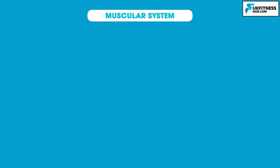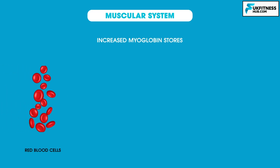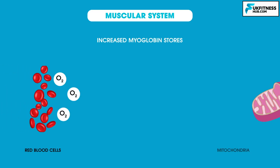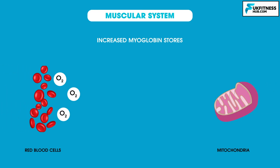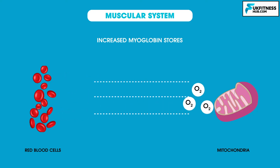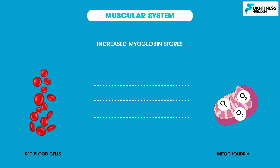Next is increased myoglobin stores. Myoglobin is responsible for extracting oxygen from the red blood cells and delivering it to the mitochondria in the muscle cell. An increase in the number of myoglobin stores increases the amount of oxygen delivered to the mitochondria for energy production.